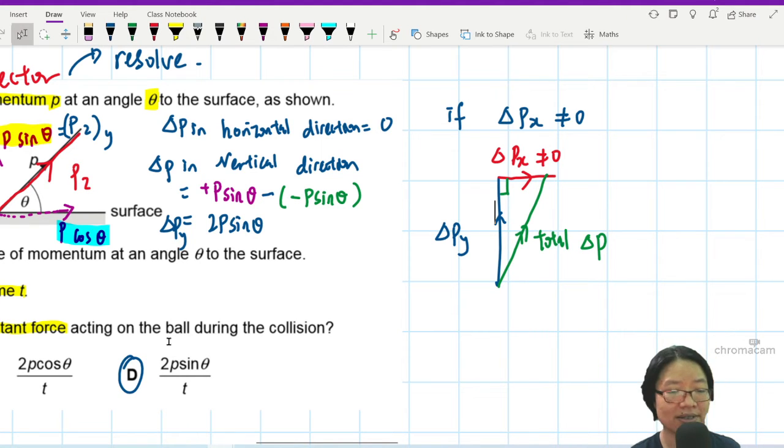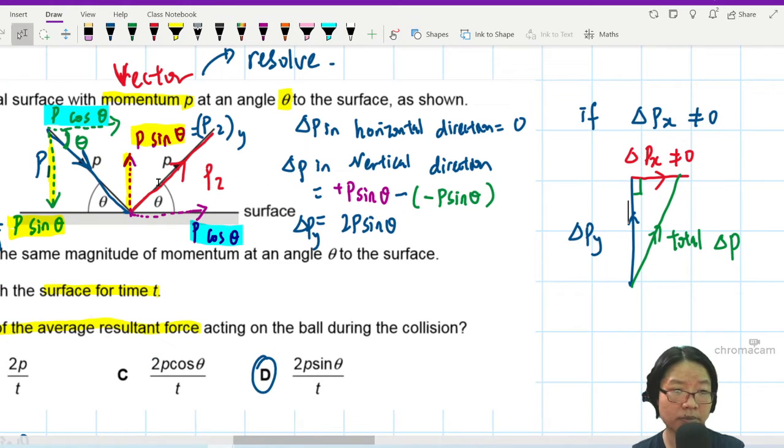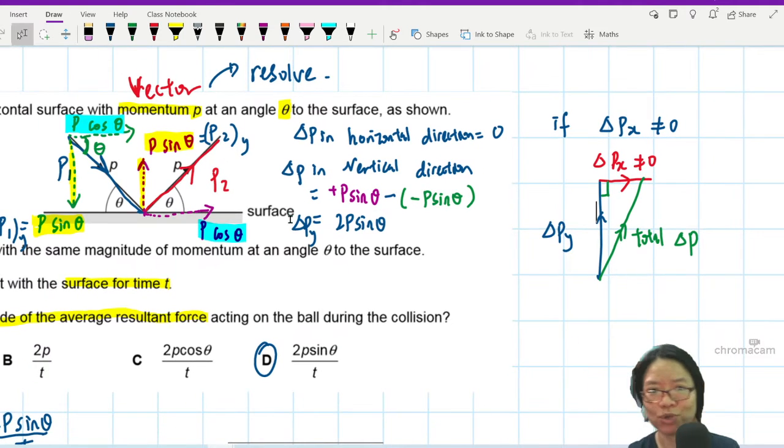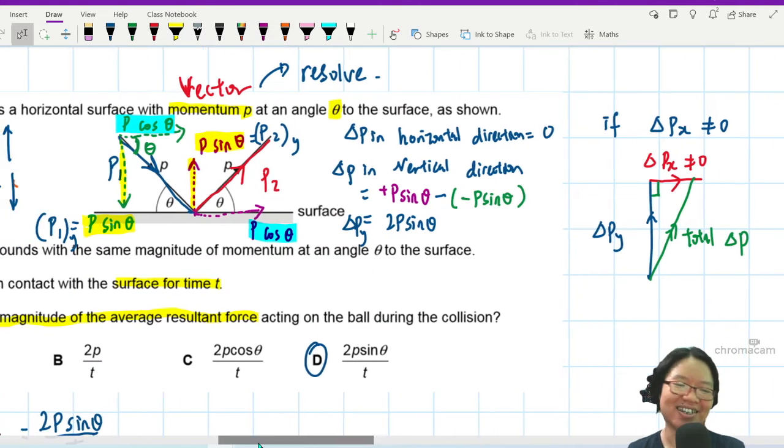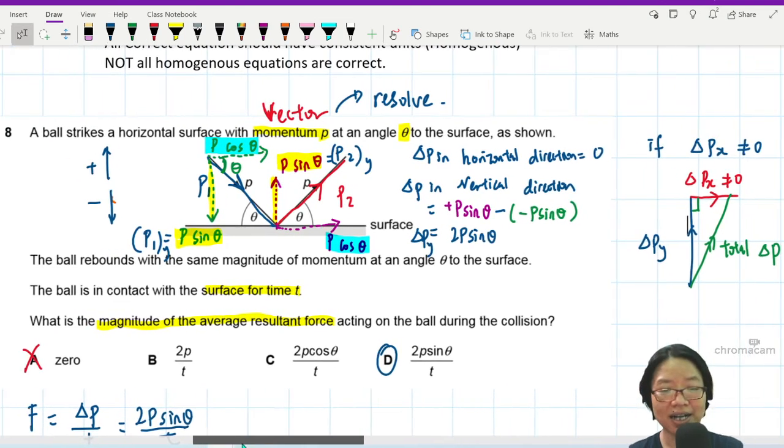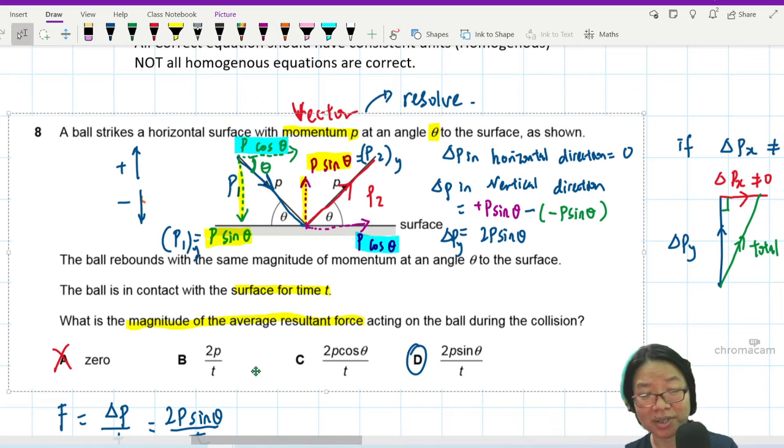In this case, I can change this one to p over 2. I keep the angle the same. Then there will be both px and py. Can I do it? Yes. Will I do it? Well, if you are sitting for my paper, I won't do it to you.